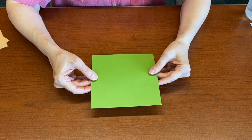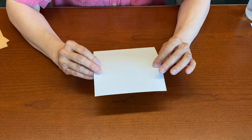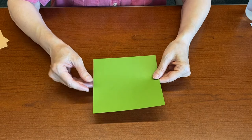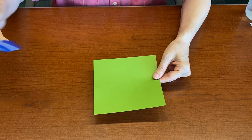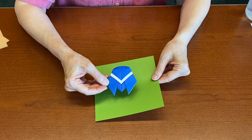For this model it's best to use a square of paper that has color on one side and white or another color on the other side, because the model we're going to fold shows both sides of the paper when we're finished.